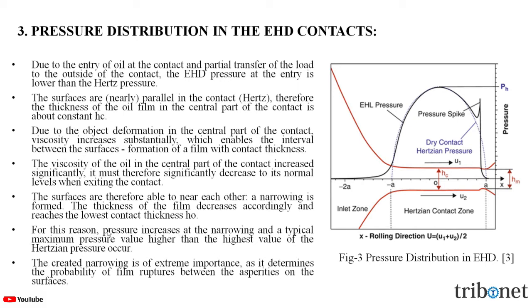For this reason, the pressure increases at the narrowing — which we can see as the spike here — and a typical maximum pressure value, higher than the highest value of the Hertzian pressure, occurs. This created narrowing is of extreme importance, and it determines the probability of the film rupturing or not, and also how this film exists between the asperities on the surfaces.